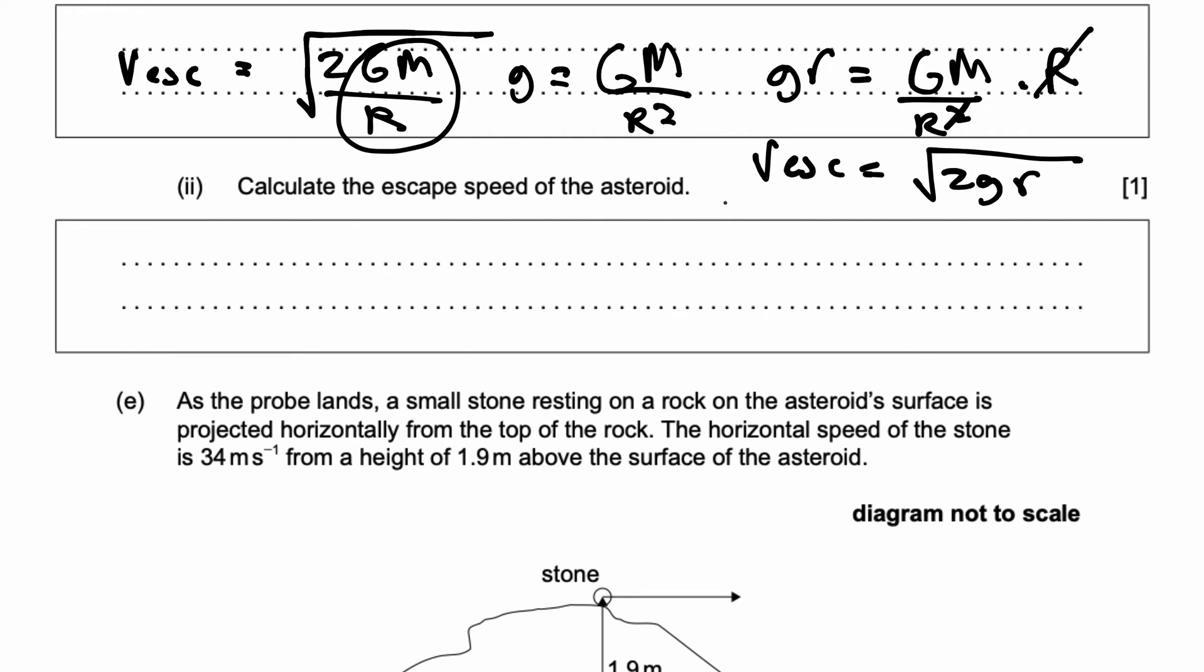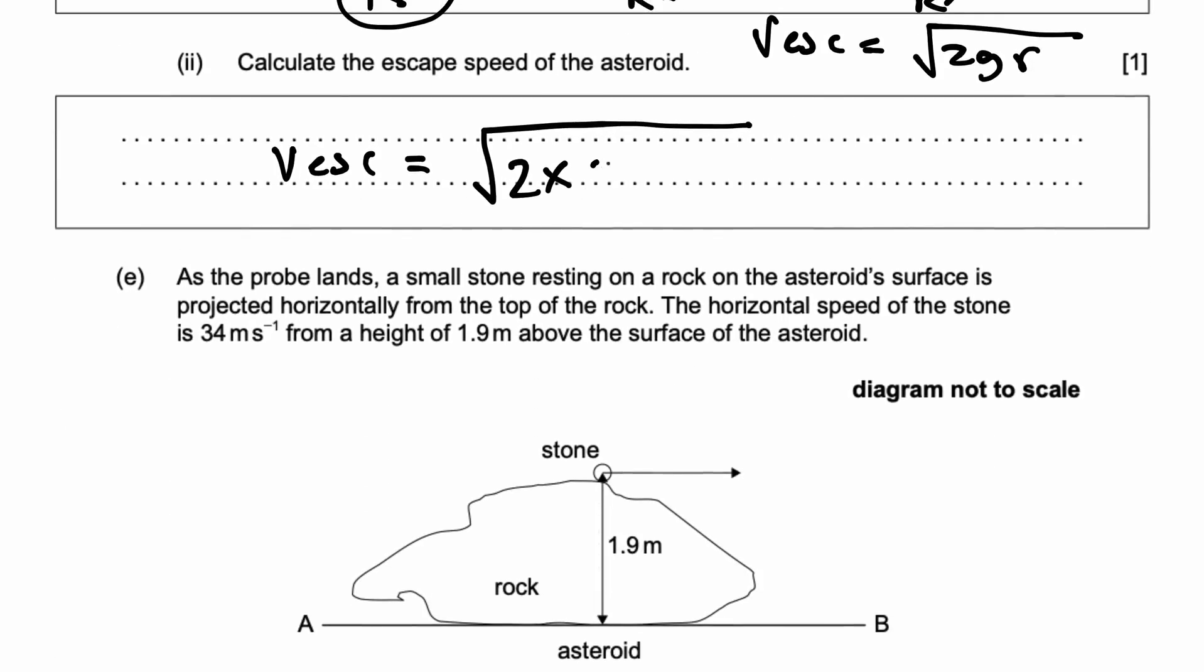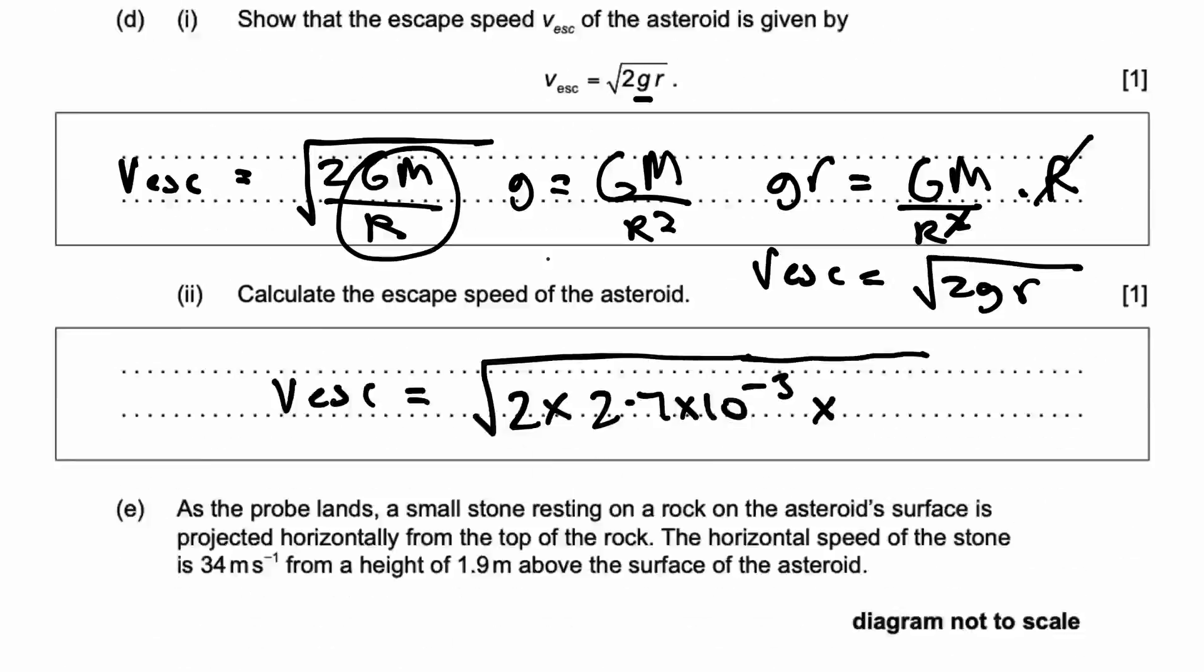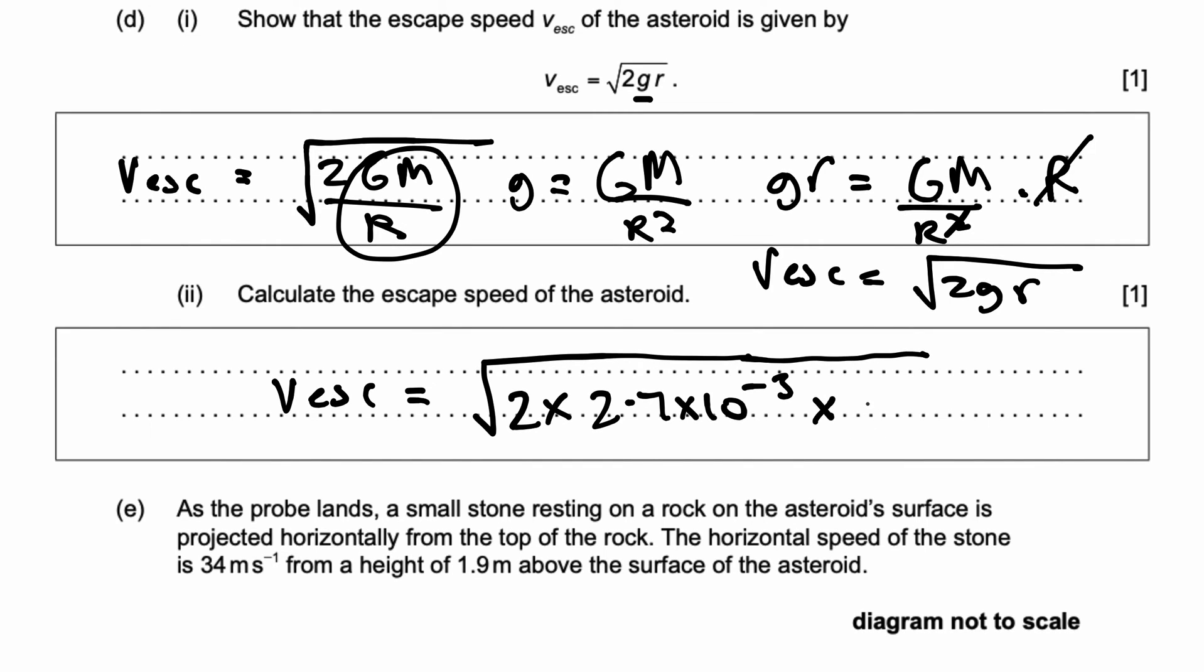Calculate the escape speed of the asteroid. Well, we found the equation before and let's just use this to find the solution for this question right here. We know that v escape is going to be equal to, using what we found in the previous question, 2 times g which in the case of this planet is equal to 2.7 × 10^-3 times the radius of this asteroid which is given by 230 kilometers. So, make that into meters. 230 × 10³.